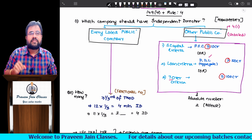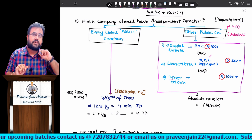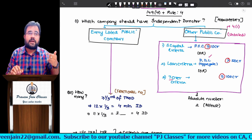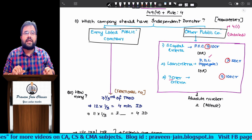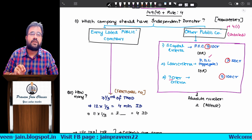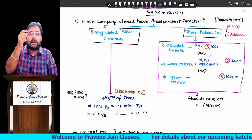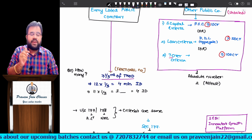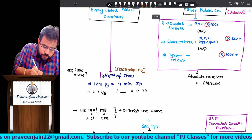For listed public companies, lawmakers gave a fractional number: one-third or more. Whatever your total number of directors, at least one-third should be independent directors. For unlisted public companies meeting the 10/50/100 crore criteria, they gave an absolute number: minimum two independent directors. So two is the absolute number for unlisted public companies, while listed public companies must have at least one-third.